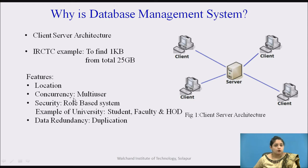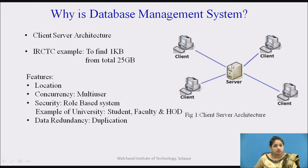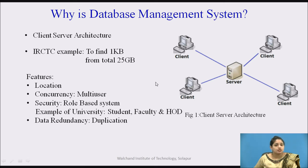Next is concurrency control. Concurrency is nothing but a multi-user feature. In a file processing system, if you want to share a file with a friend, you need to physically share the file or give your laptop to someone else. But in DBMS, the data is stored on the server — you just log in and access it. Multiple users can access the same data simultaneously from their own devices, without giving access to anyone's personal device. This is the concurrency feature, which provides multi-user access, and it is not possible in a file processing system.